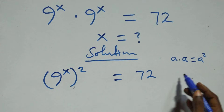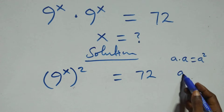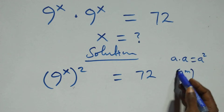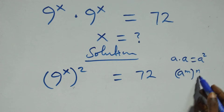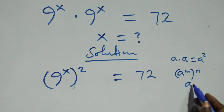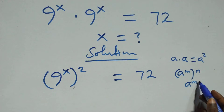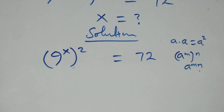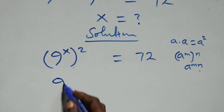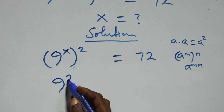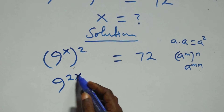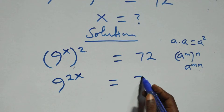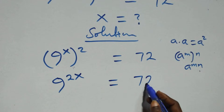This also follows when we have a raised to power n, raised to power n. This is the same as a raised to power n times n — that is, the powers multiply — and we have 9 raised to power 2x equals to 72 here.